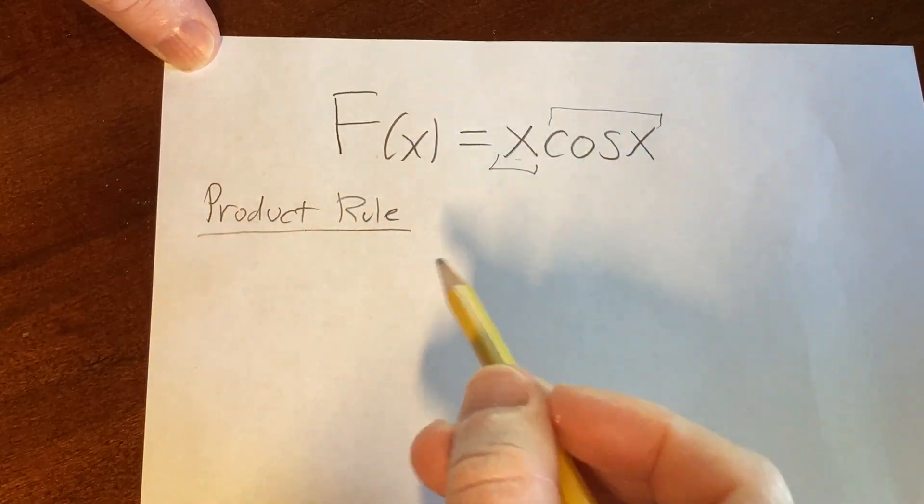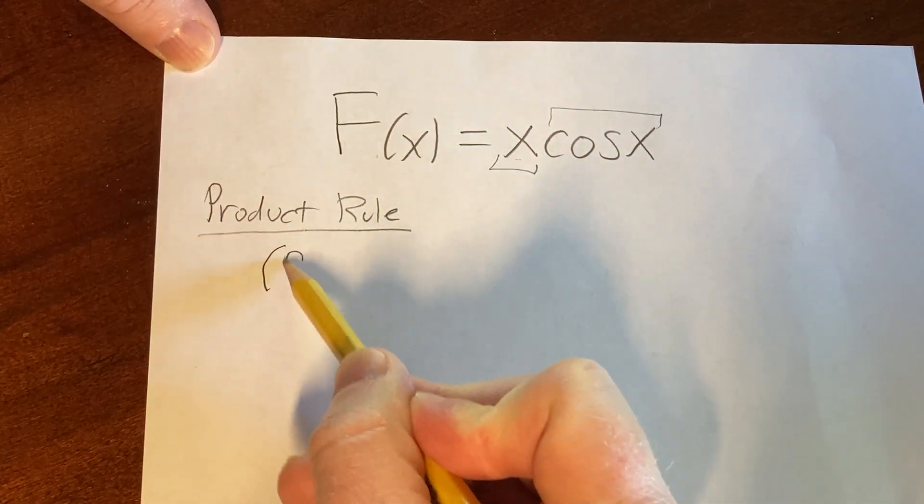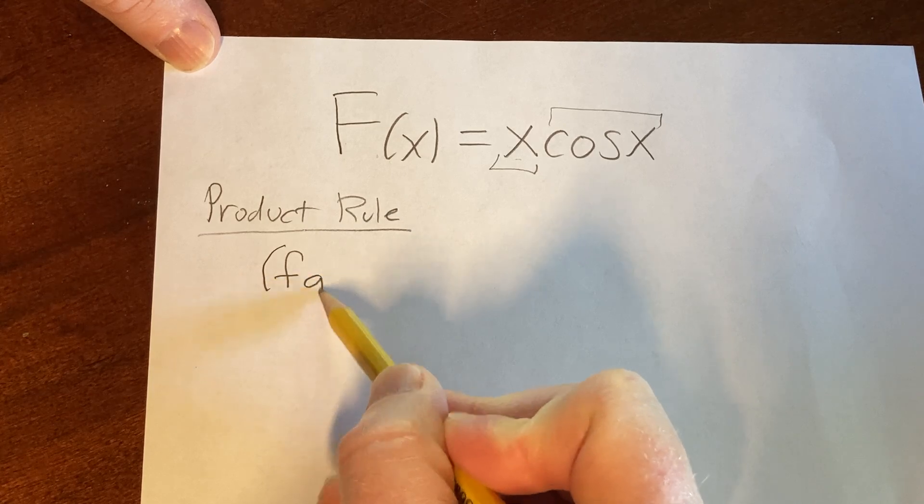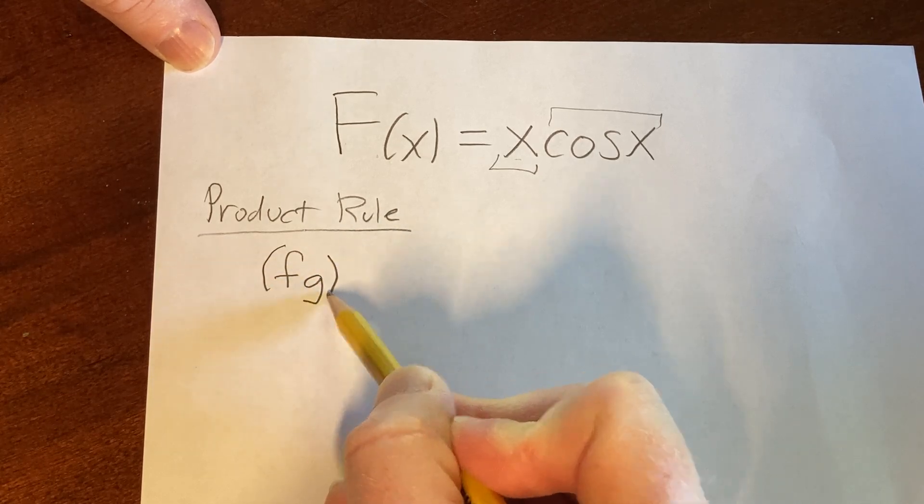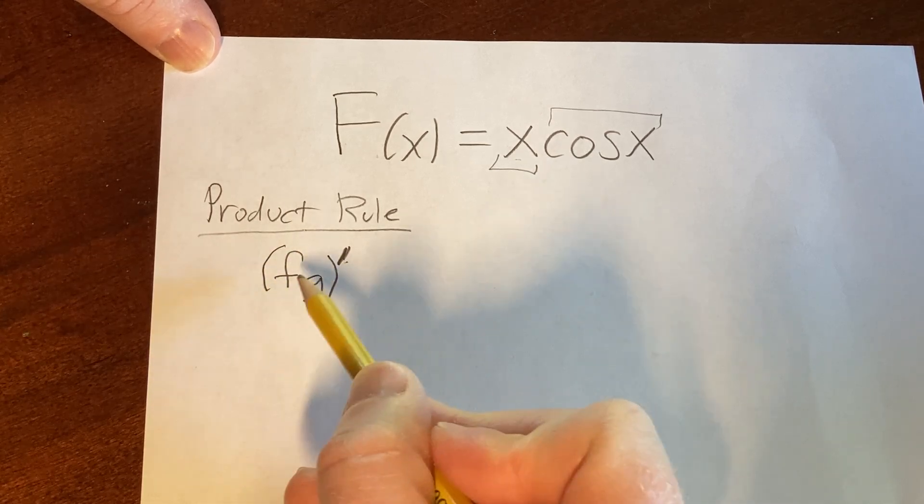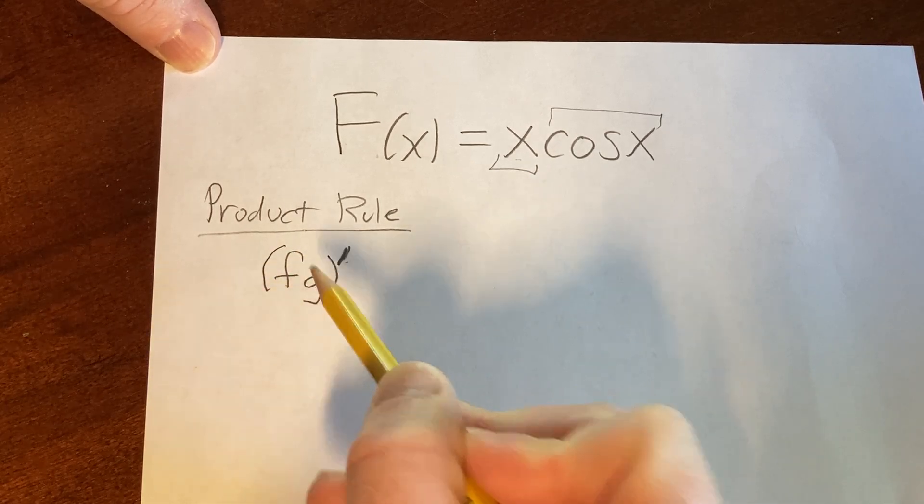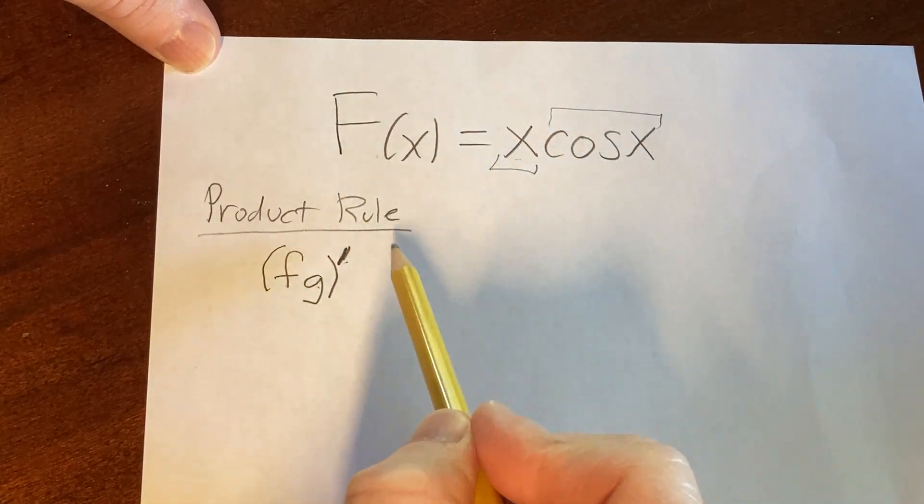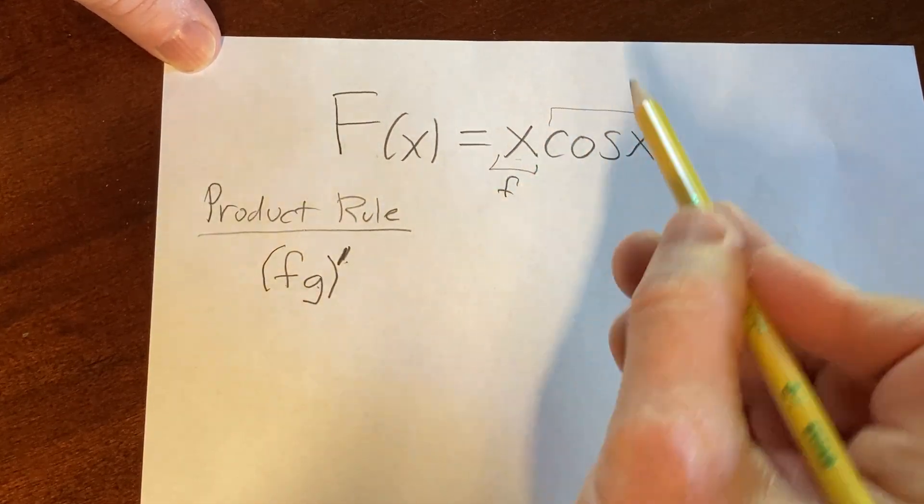The product rule is pretty useful. It basically says if you have a function F and a function G, and you take the derivative—that's what this prime symbol means, take the derivative of whatever's in the parentheses—so we're taking the derivative of F times G. Here it's x times cosine x. So this is our F, and this is our G.